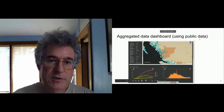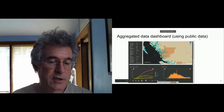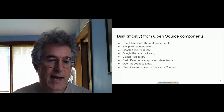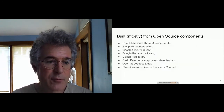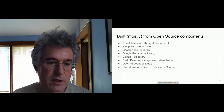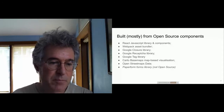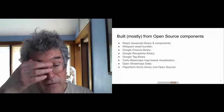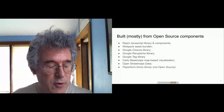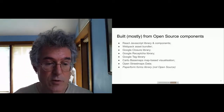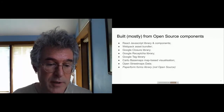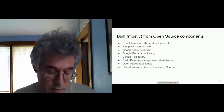This whole system was built mostly from open source components. It uses the React JavaScript library, the Webpack Asset Bundler, a bunch of libraries from Google's open source web development toolkit, Carto basemaps for the heat map, and OpenStreetMap data. The only library I found that I don't think is open source is the Paper Forms library. But other than that, it was completely an open source system.